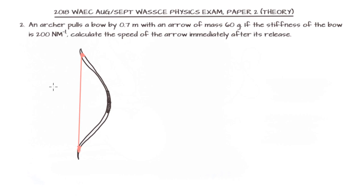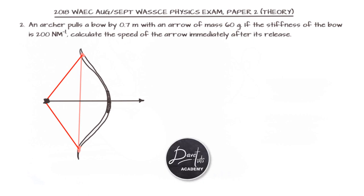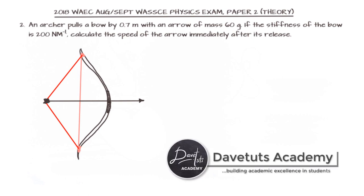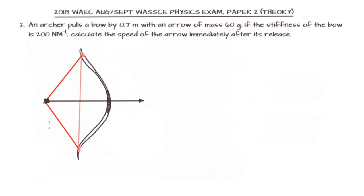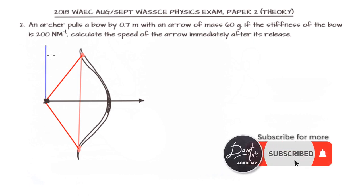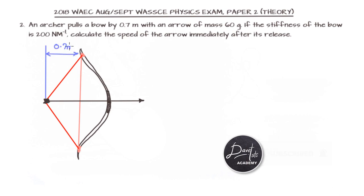The string of the bow is pulled backward and then released to shoot the arrow at a target. The extension by which the bow was pulled is 0.7 meters. So the mass of the arrow is 0.06 kilograms, and the stiffness k is 200 newtons per meter. What is happening is a translation of energy from potential energy — when the bow is pulled — to kinetic energy when it is released.